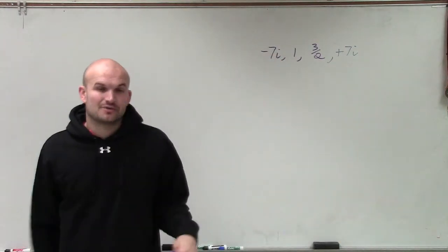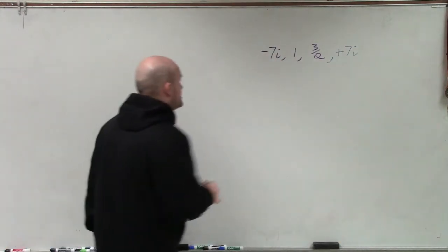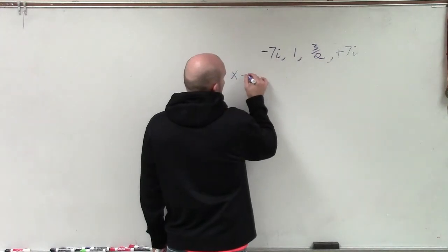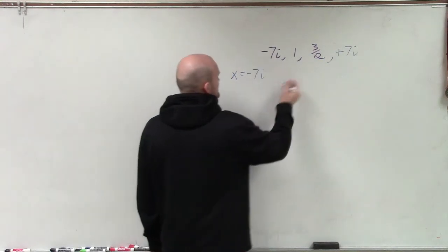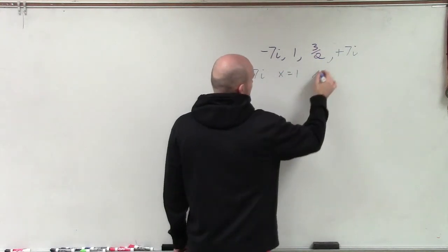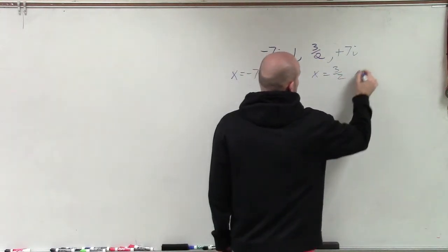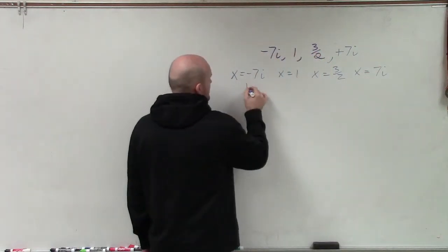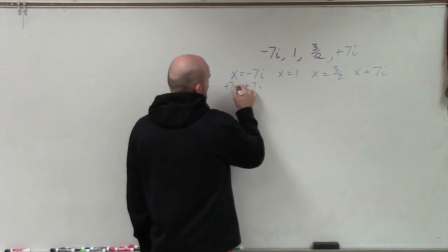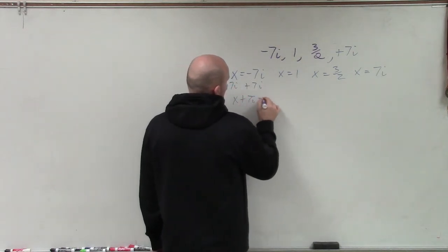So therefore, now what I need to do is set each one of my factors equal to zero. So therefore, I have x equals negative, or set each of my factors equal to x, then I'll set them equal to zero. So x equals negative 7i, x equals 1, x equals 3 halves, and x equals positive 7i. Now, I set them equal to zero. So in this case, I'll add 7i. So I have x plus 7i equals zero.